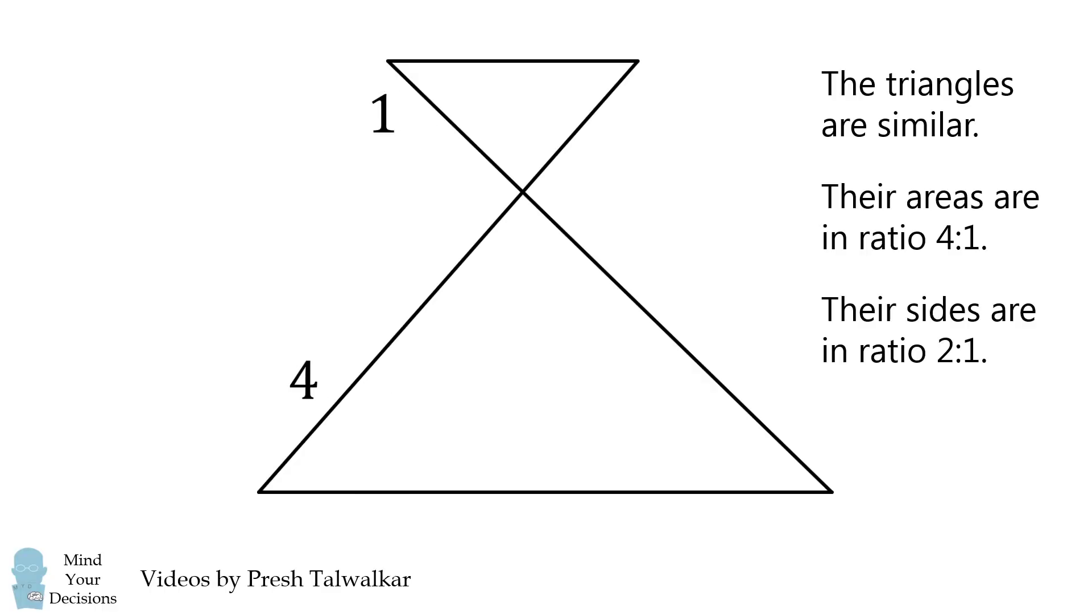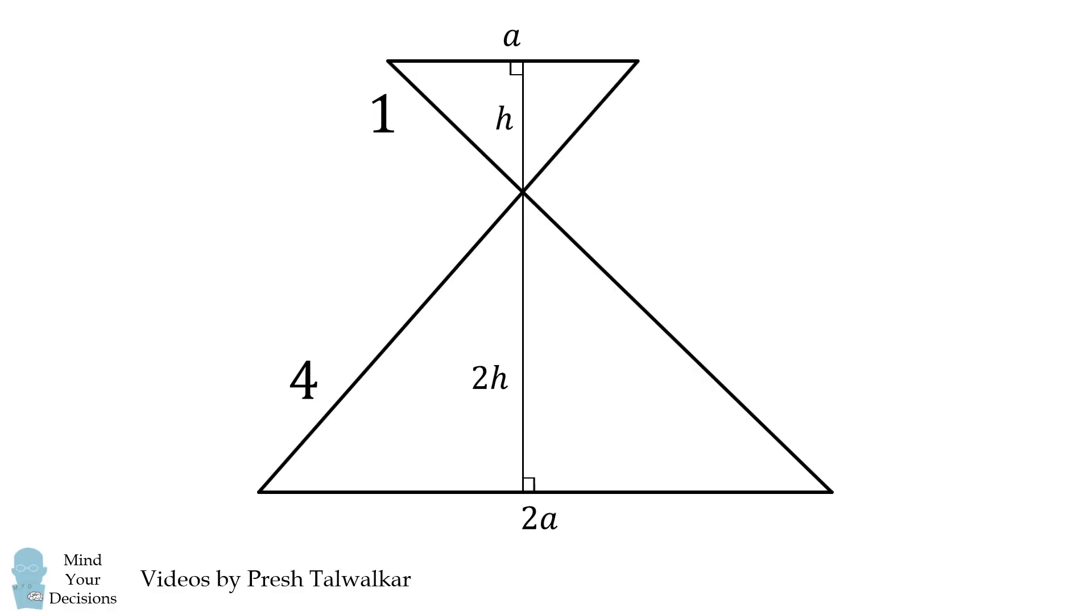Suppose the top triangle has a side length of a. Its corresponding side length in the bottom triangle must be 2a. If the top triangle has a height of h, then the bottom triangle will have a height of 2h. Consider the area of the top triangle. It'll be a times h all over 2. That'll be equal to 1. This means ah is equal to 2.